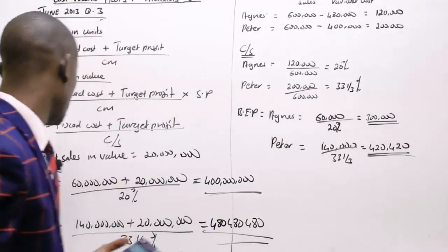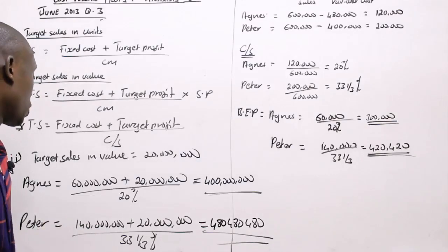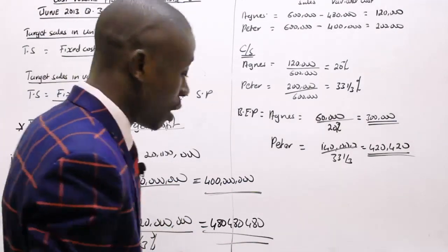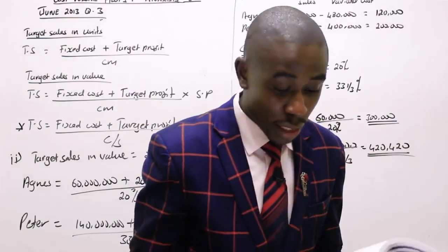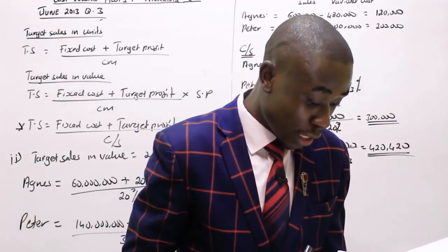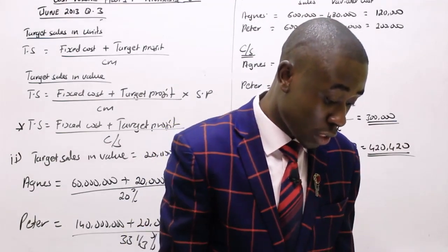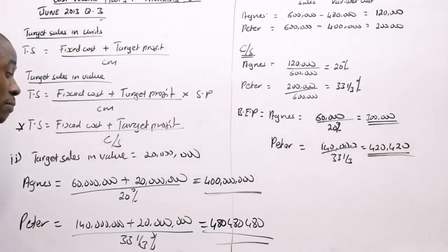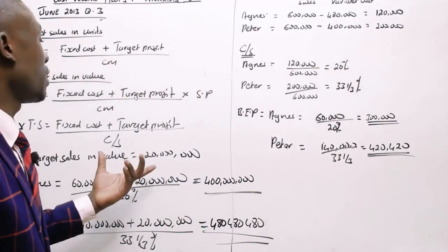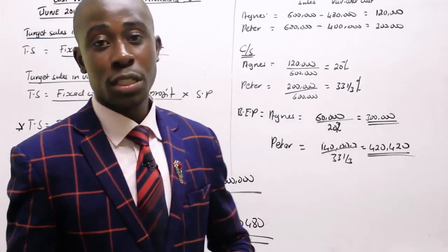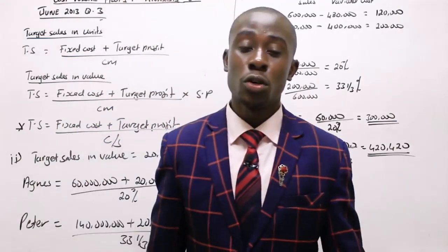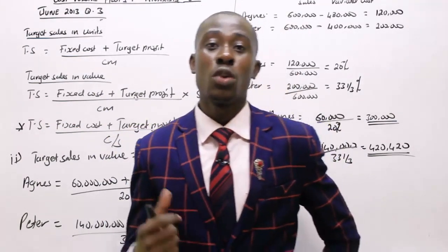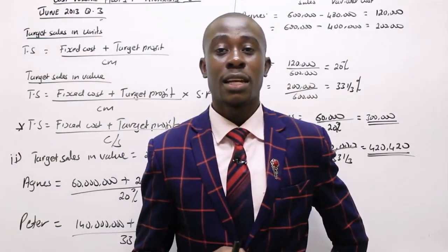So that is our break-even point — both in value and for the target sales concept. Agnes's target sales figure is 400 million, and Peter's is 480 million. At any given point, when considering this topic, this is what you are supposed to tackle. It has given us a new concept of break-even point. If you have any questions, you can ask us in our portal. I'll wish you to join me in the next session where we'll be tackling more questions of the same. Thank you very much.